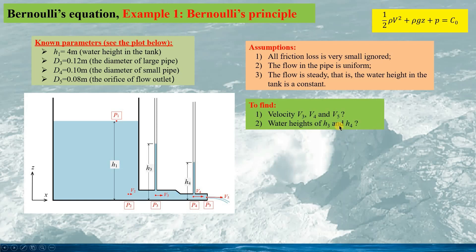In this problem, we need to find out the velocities V3 in the large pipe, V4 in the small pipe, and V5 at the outlet, and the water height in the small vertical tubes, H3 and H4.